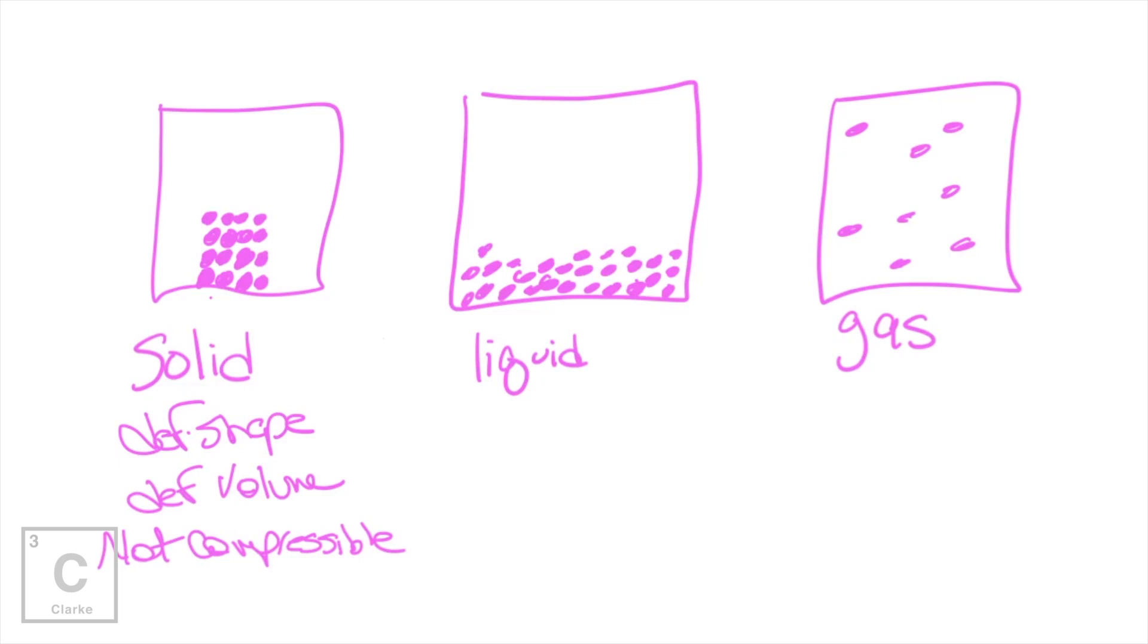Liquids, their intermolecular forces are a little bit weaker, so it allows those particles to be able to slide past each other. They can slide past each other, but it does keep them all together. Liquids have no definite shape. Because the intermolecular forces are a little bit weak and those particles can flow past each other, liquids take the shape of their container. But they do have a definite volume. You can pour liquid into a graduated cylinder, see how much there is, so it does have a definite volume.